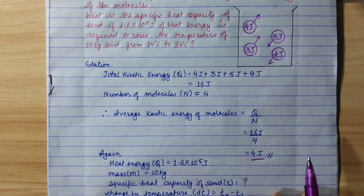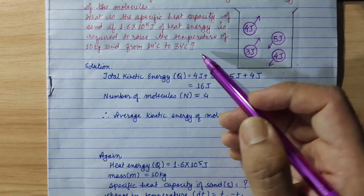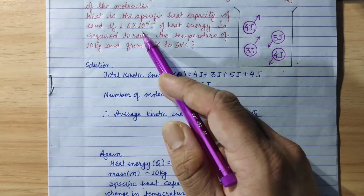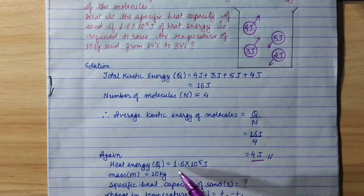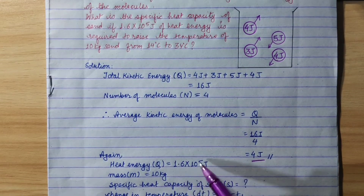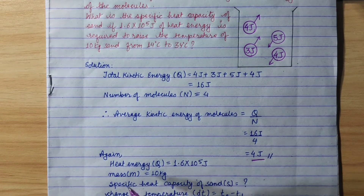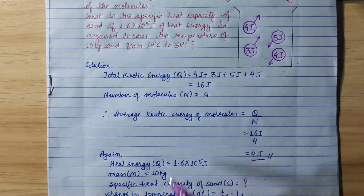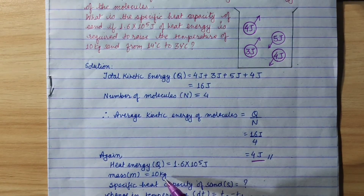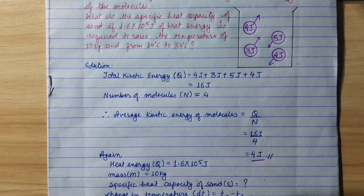Now, the second part. The second part is the heat energy. Q is equal to 1.6 into 10 to the power of 5 joules. The mass is equal to 10 kg.